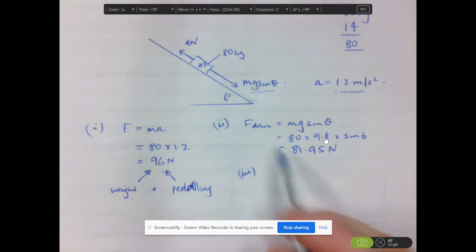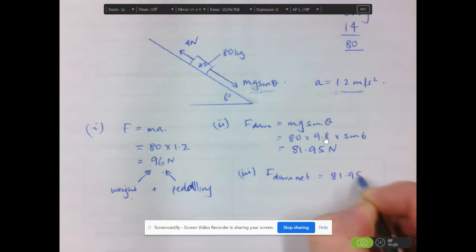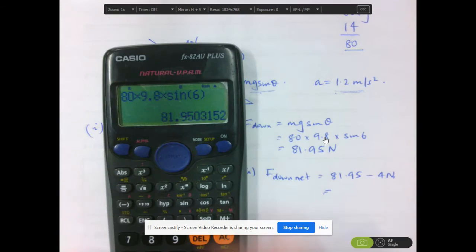So the overall force acting down the plane, so F down, and we'll just say it's the net force, would be 81.95 minus 4 newtons, which is acting up. So minus 4 there.